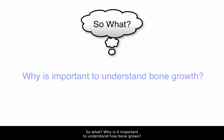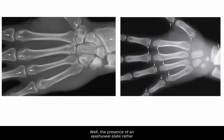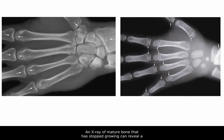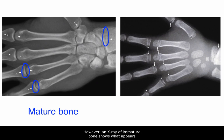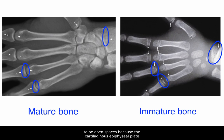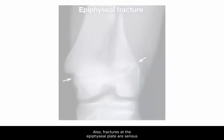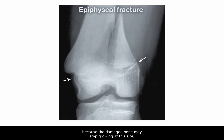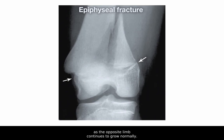So what? Why is it important to understand how bone grows? The presence of an epiphysial plate rather than an epiphysial line tells us that a person's skeleton is still growing. An x-ray of mature bone that has stopped growing can reveal a distinct epiphysial line. However, an x-ray of immature bone shows what appears to be open spaces because the cartilaginous epiphysial plate is not visible in x-rays. Also, fractures at the epiphysial plate are serious and require careful treatment because the damaged bone may stop growing at this site, risking asymmetrical limb length as the opposite limb continues to grow normally.